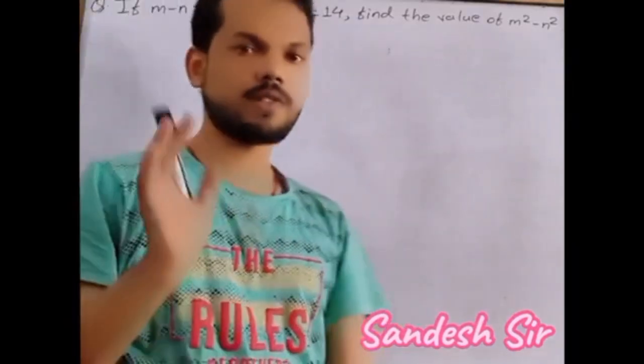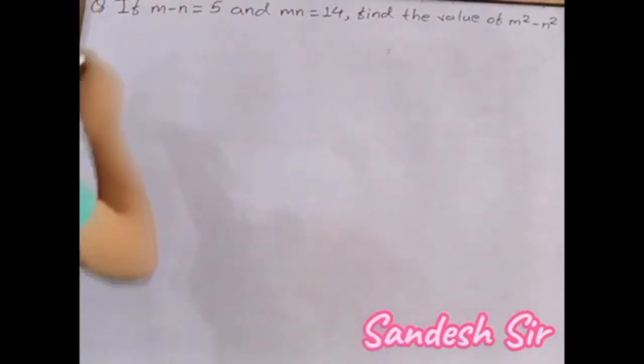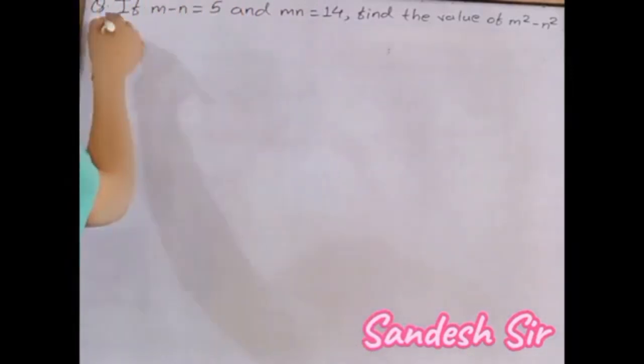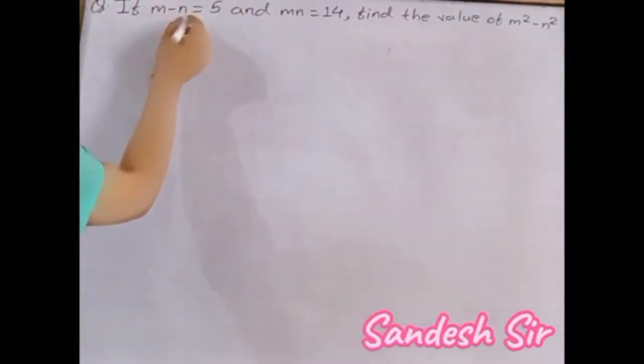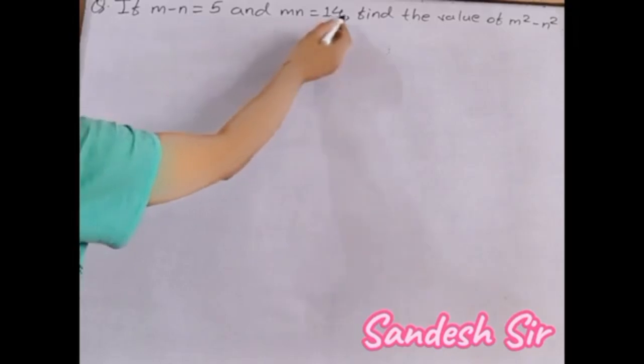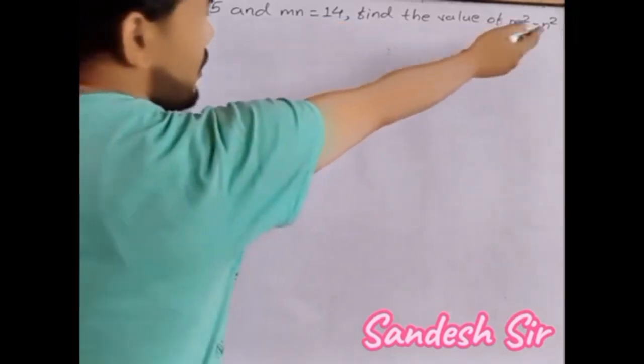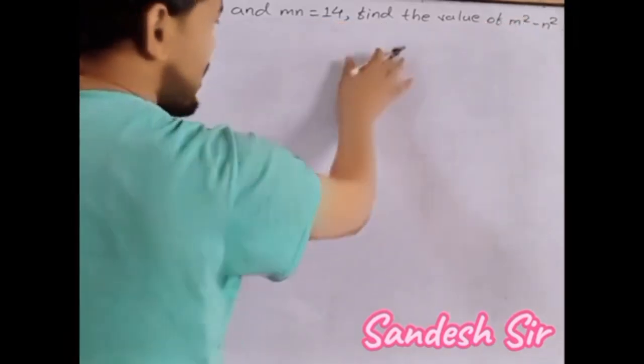Hello students, today I am going to give you a question. If m minus n is equal to 5 and m n is equal to 14, then find the value of m squared minus n squared.